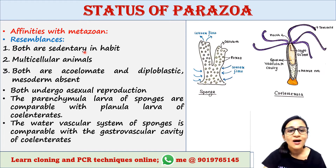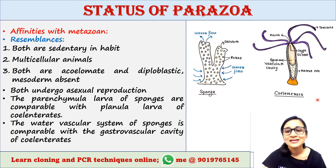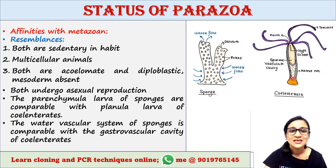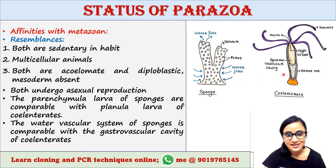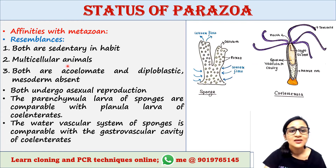Regarding affinities with Metazoa: among Metazoa, coelenterates exhibit maximum similarities with Parazoa. Both are sedentary in habit — they do not move. Both are multicellular animals.